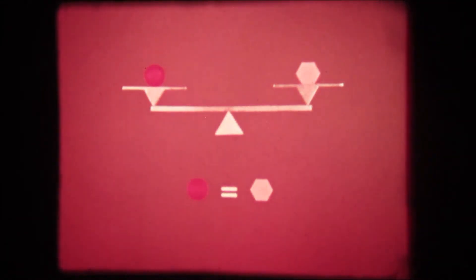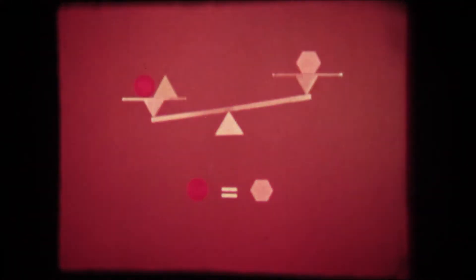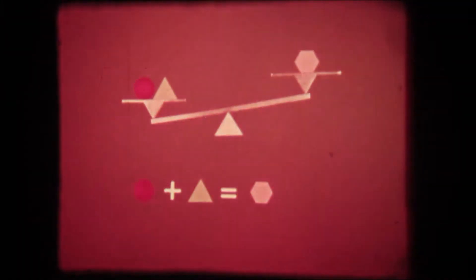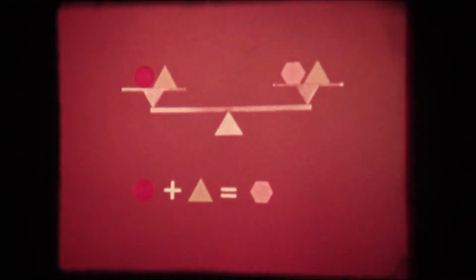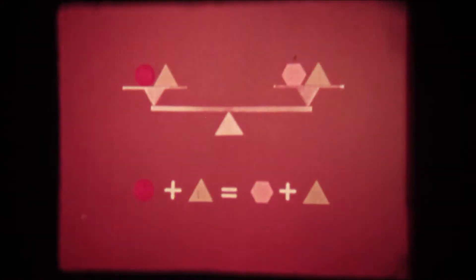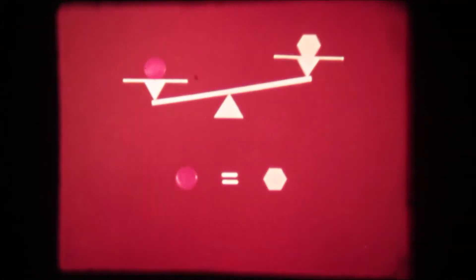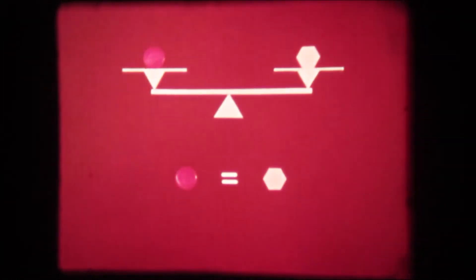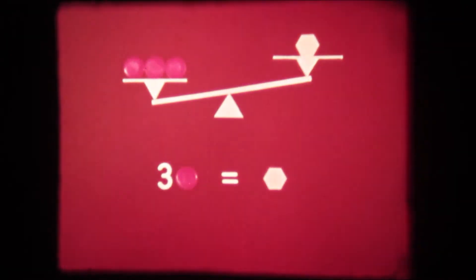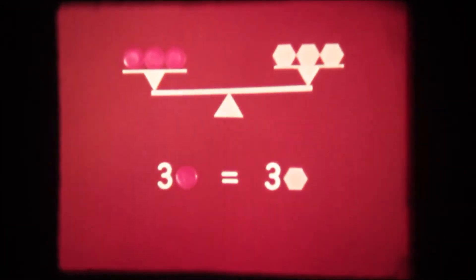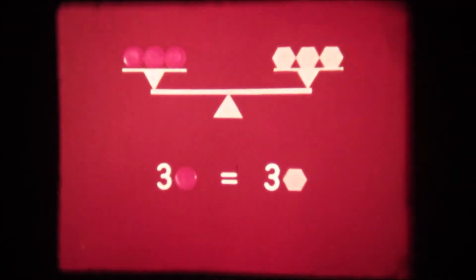Since an equation must always be in balance, if you add a quantity to one side, you must add a quantity of equal value to the other side. If you multiply one side of an equation by a number such as three, you must multiply the other side by the same number to keep the equation in balance.